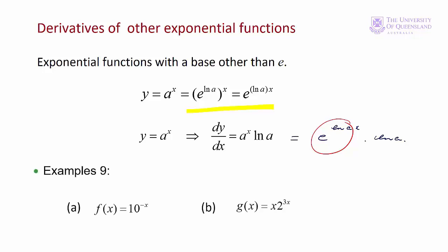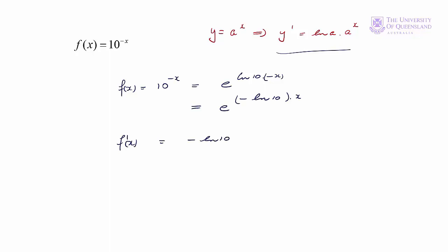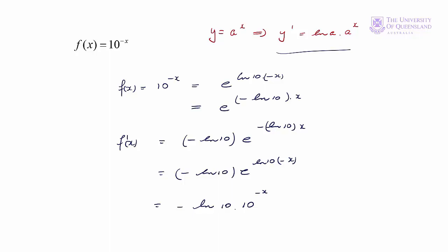Let's see how that works using a simple example. f(x) = 10^(−x) = e^(ln(10)·(−x)). We simplify to e^(−ln(10)·x). Using the chain rule, f'(x) = −ln(10)·e^(−ln(10)·x) = −ln(10)·e^(ln(10)·(−x)) = −ln(10)·10^(−x), where e^(ln(10)) is just 10.